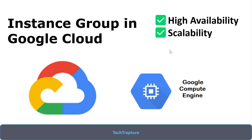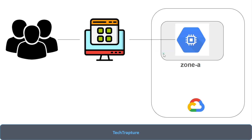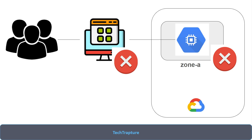Let me give you a simple example. I have a set of multiple users across the globe who are accessing my web application deployed on a Google Compute Engine standalone VM — not using an instance group. I'm simply using a virtual machine in Zone A and I deployed my web application on it. Now suddenly my application crashes or my zone goes down, so my application also goes down. Users are not able to access it — I don't have high availability here.